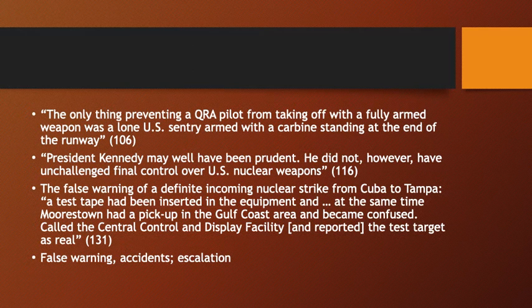During the Cuban Missile Crisis, Sagan finds that the only thing preventing a QRA - a rapid response pilot - from taking off with a fully armed weapon was a lone U.S. sentry armed with a carbine standing at the end of the runway. And more alarmingly, his conclusion is that President Kennedy may have been prudent, but he did not have unchallenged final control over U.S. nuclear weapons.